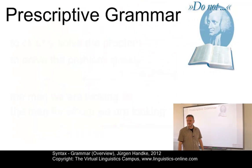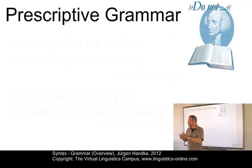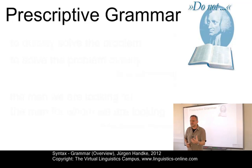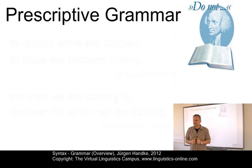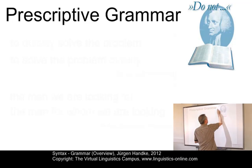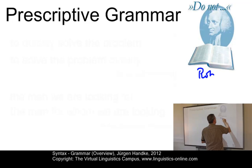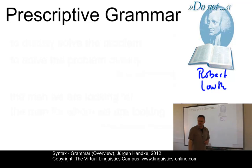Let's start with prescriptive grammar. A prescriptive or normative grammar is an account of a language that seeks to establish norms of correct grammatical usage. Grammars of this kind do not merely describe and analyze forms of a language that are in common use among the members of a language community, but they lay down rules as to how language users ought to speak and write. They were very popular in the past. Here you see Robert Lowth, the author of a prescriptive grammar of English written in the 17th century.